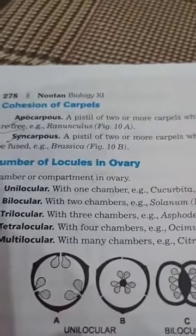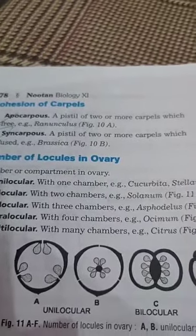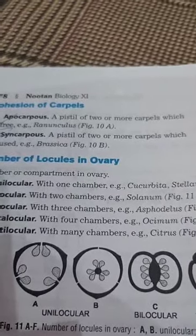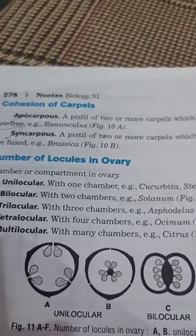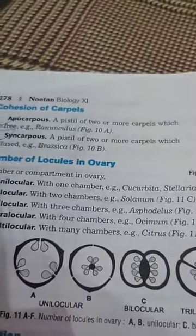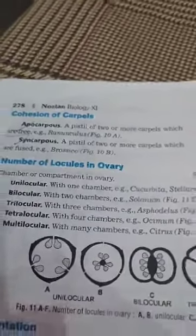There are some terms important for reading plant families. For the female part: if two or more carpels are present but free from each other, it is called the apocarpous condition. If two or more carpels are present but fused, it is called the syncarpous condition. Next is placentation.